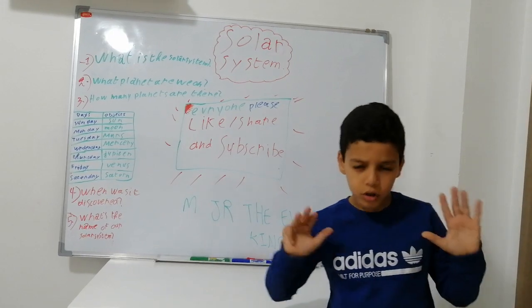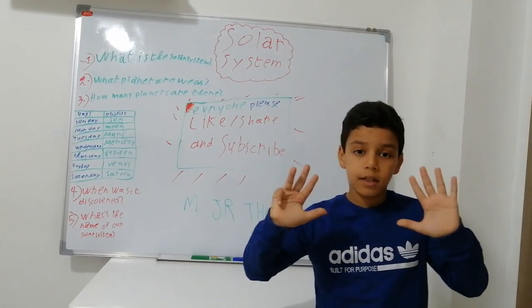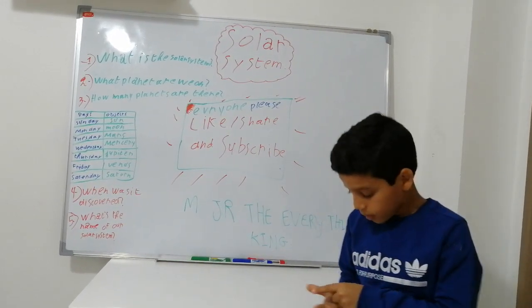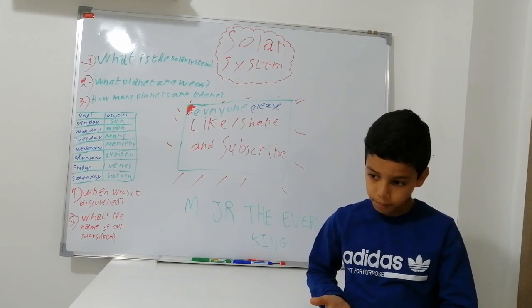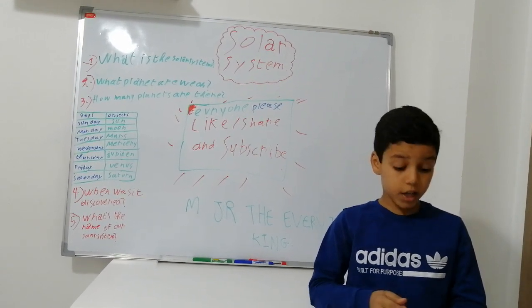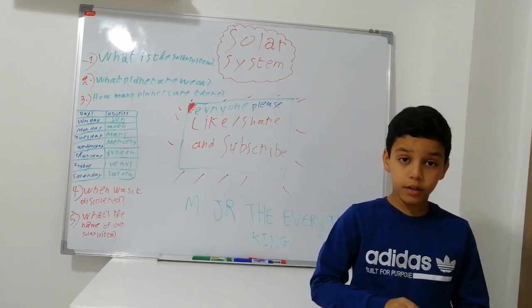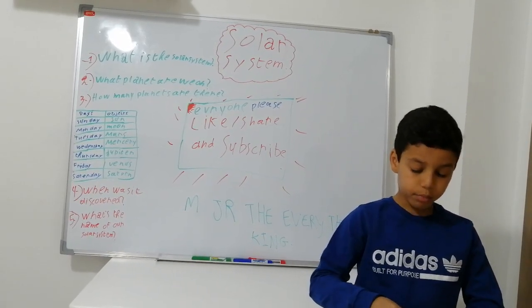How many planets are there? There's a total of nine planets. There is Mercury, Venus, Earth, Mars, Jupiter, Saturn, Uranus, Neptune, and Pluto.